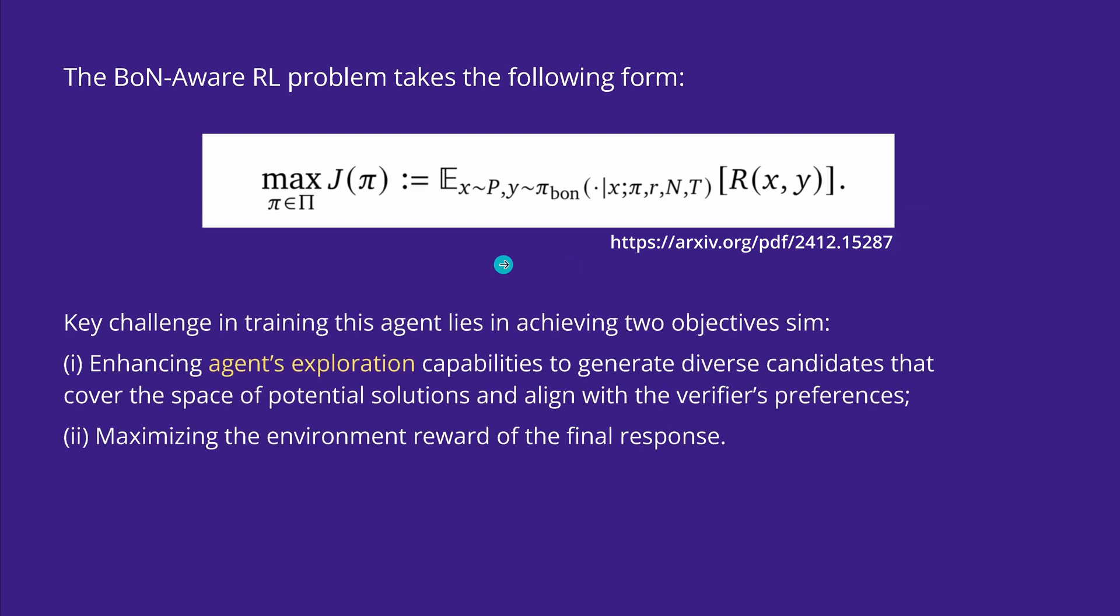The key challenge in training this agent lies in achieving two objectives at the same time. We want to enhance the agent exploration capabilities, so we want that this generates quite diverse candidates that cover quite a lot of the space of the potential solution. If you think of a mathematical space as a solution space, we want that our agent explores all the corners of the space and aligns with the verifier's preferences.